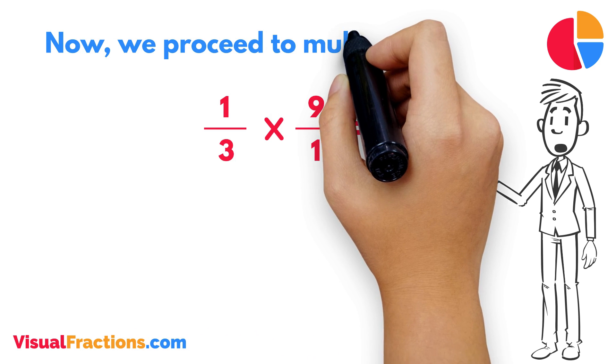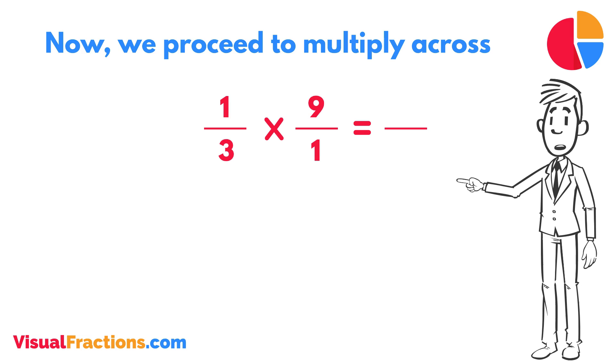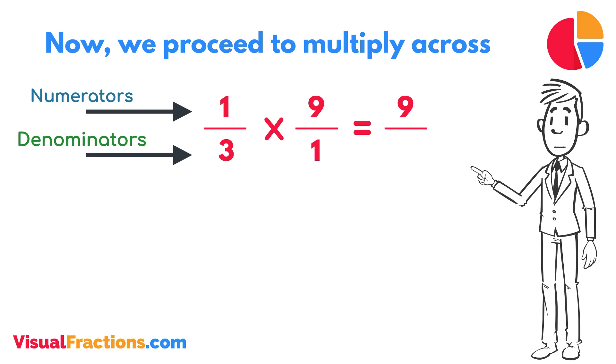Now, we proceed to multiply across. First, multiply the numerators, one times nine equals nine. Next, multiply the denominators, one times three equals three.